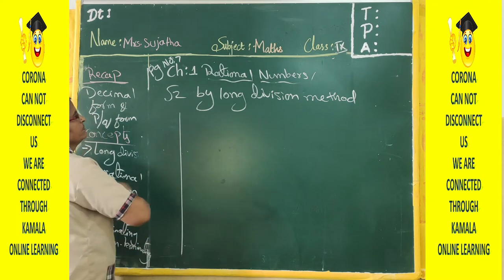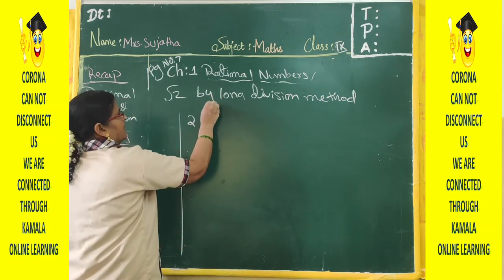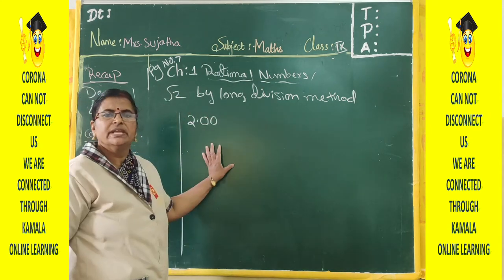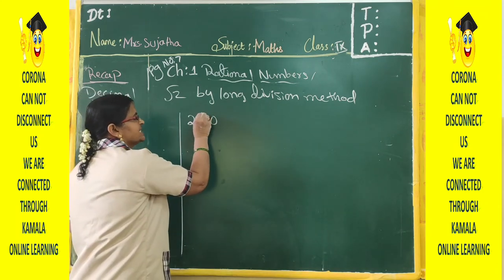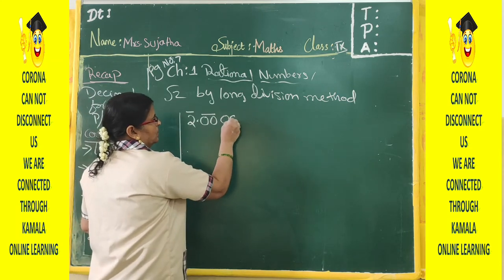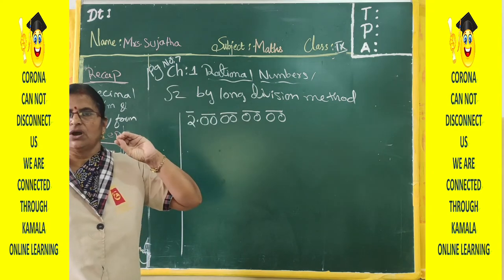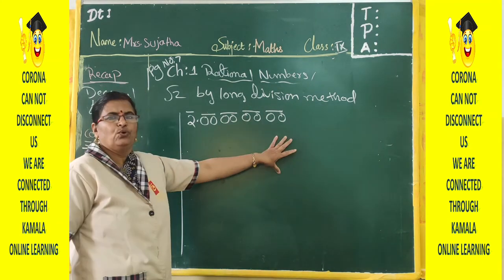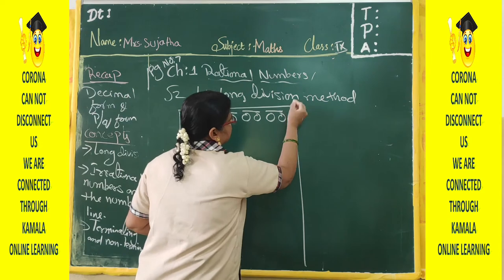Let us find the value of root 2 by long division method. Write 2, then put a decimal and add zeros — take at least 8 zeros, grouped in pairs. Draw the division line and the result line. We need 4 pairs of zeros because we want the answer up to 3 decimal places, and we need to check the 4th decimal to round correctly.